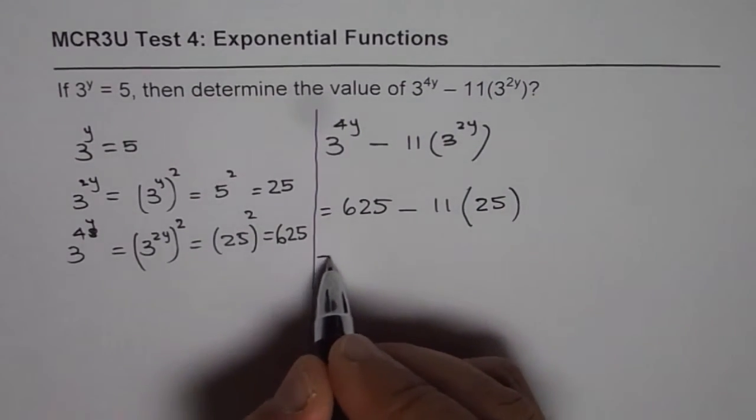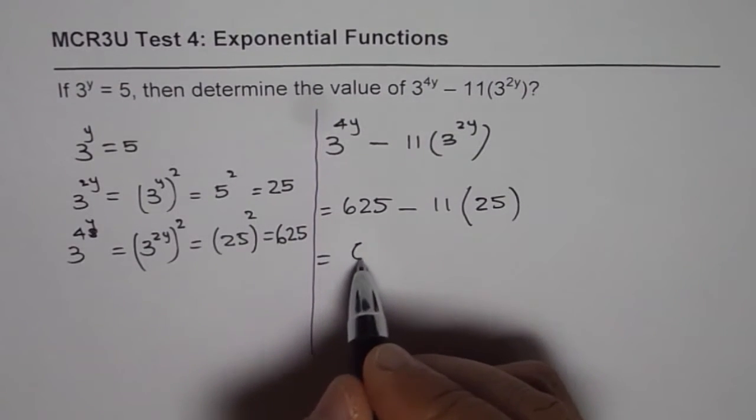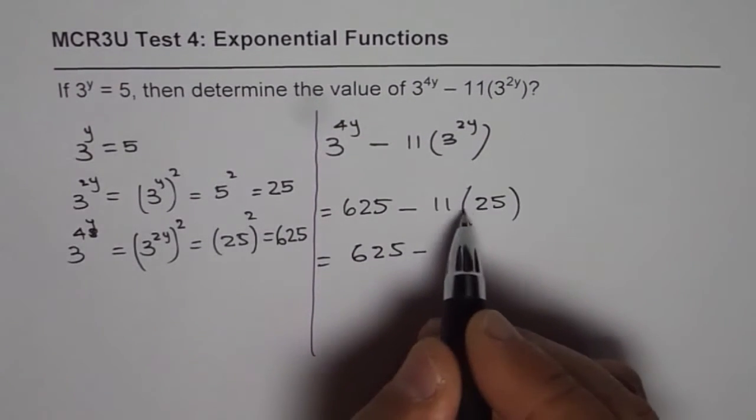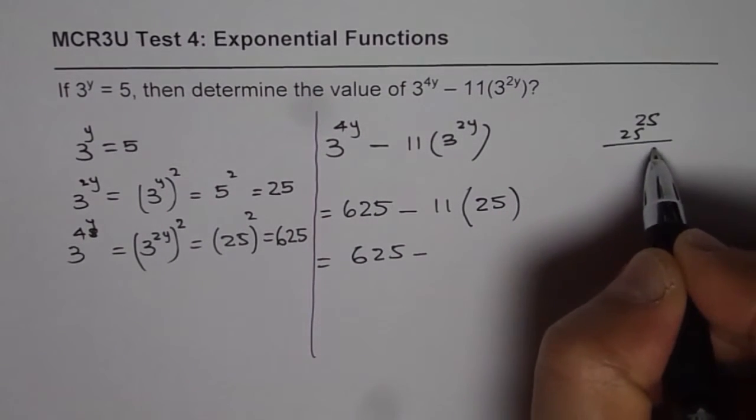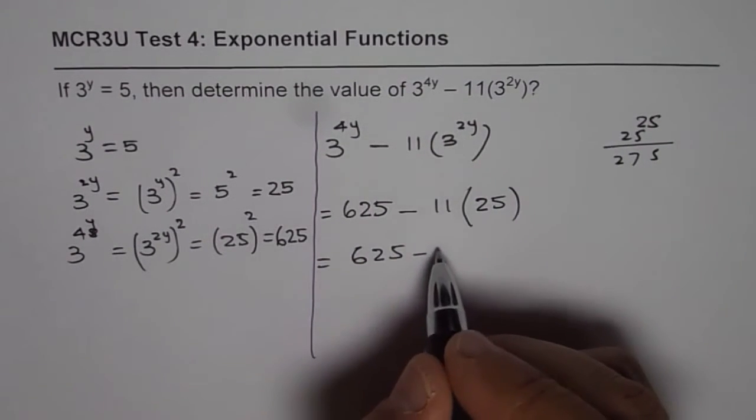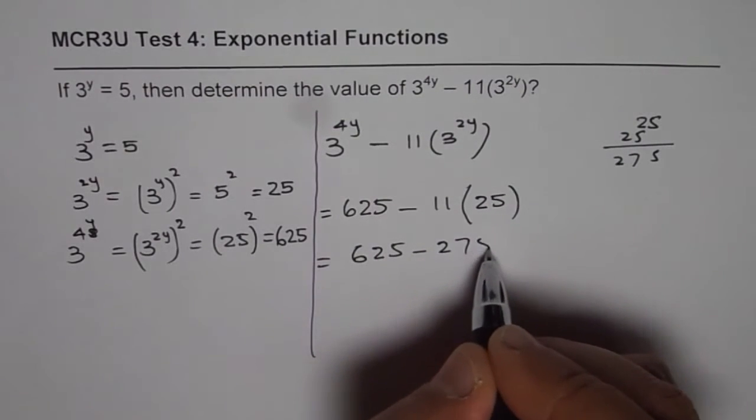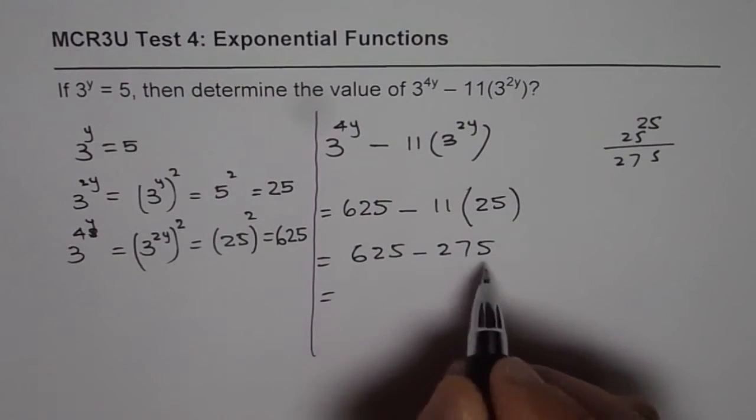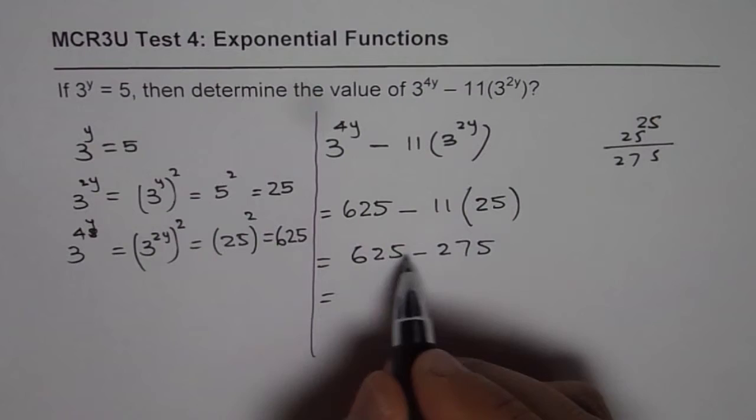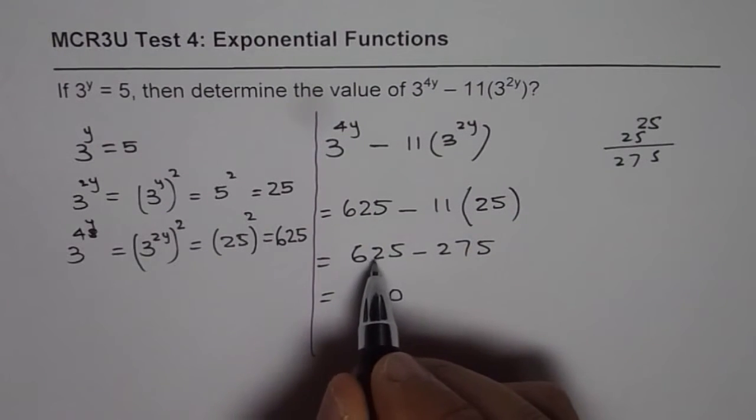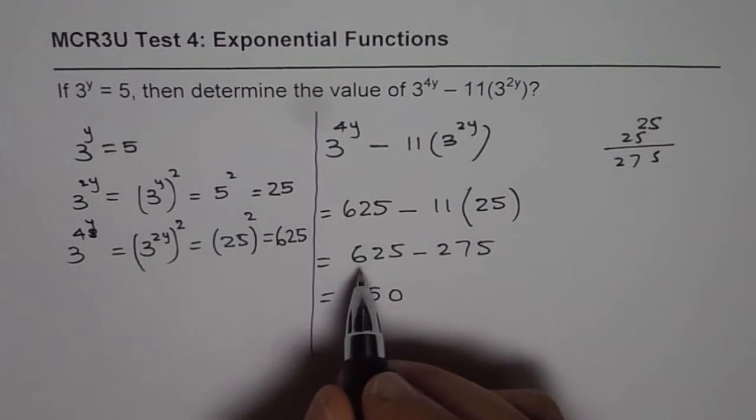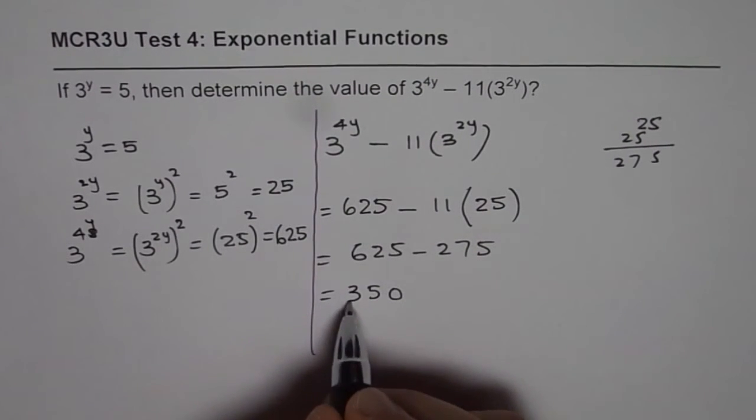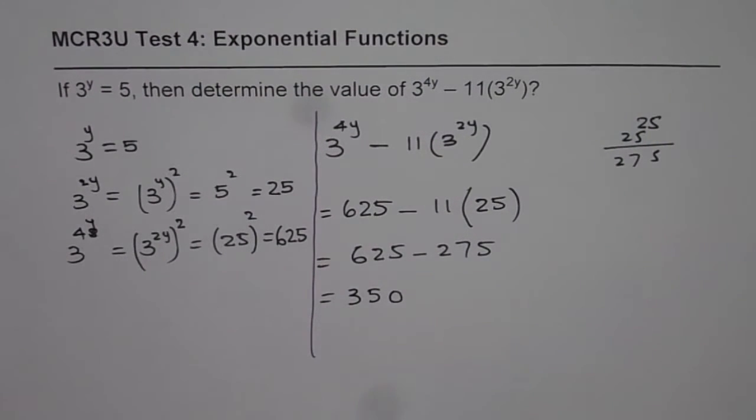Now we can use the calculator, multiply 625 minus 11 times 25 means 275. And once you find the difference, 5 take away 5 is 0, 12 take away 7 is 5, and 5 take away 2 is 3. You get exact value of 350.